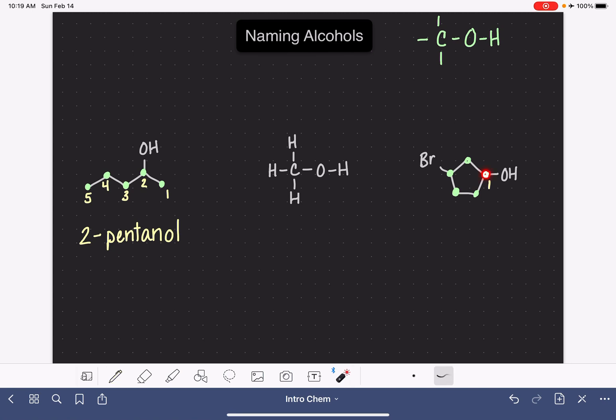Once we've decided that this is carbon number one, then we have to make a choice about whether we number the ring clockwise or counterclockwise. And we want to make that decision based on the position of the bromine. Since we've taken care of giving the alcohol the lowest possible number, our next job is to give the bromine the next lowest possible number.